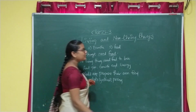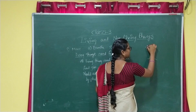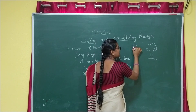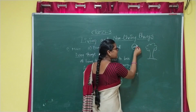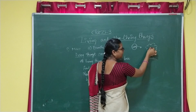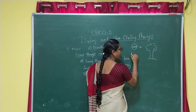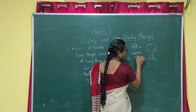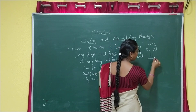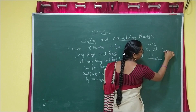What is photosynthesis? Let us assume this is a plant, and this is the sun. The sun gives sunlight. The plant breathes in carbon dioxide, and the plant absorbs water, to make food.